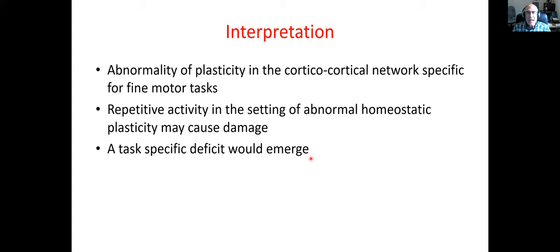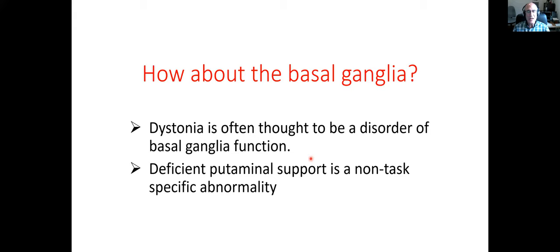Now I'd like to finish by bringing in the basal ganglia. Almost everything I've been talking about so far has been a cortical abnormality, but the basal ganglia are relevant — we know because structural lesions in the basal ganglia lead to different types of dystonia. MRI studies can find decreased activation of the putamen in patients, so there are abnormalities that can be seen there.